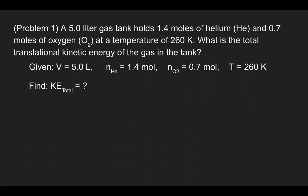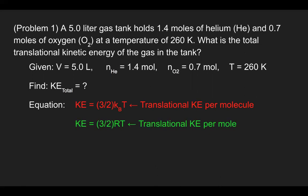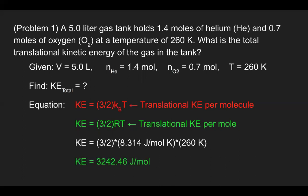We want to determine the total translational kinetic energy for the entire system. In week 8, the first part of the video, you covered translational kinetic energy per molecule. But there's another variation looking at it in terms of per mole, which simply changes the constant. We need to use this because our information is given in terms of number of moles. Plugging in the temperature of 260 degrees Kelvin, we get a kinetic energy of 3,242.46 joules per mole.